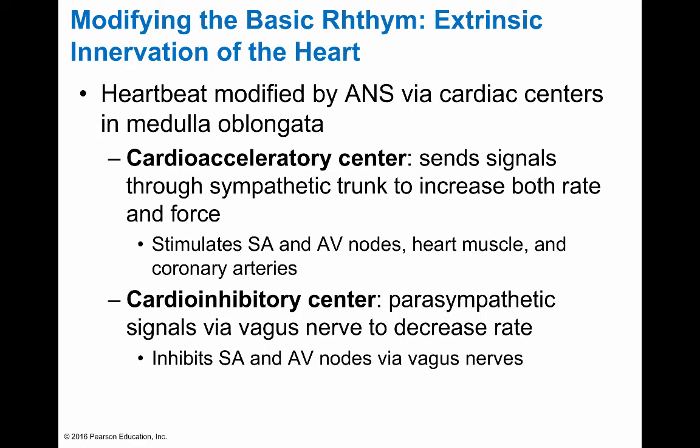There are external innervations of the heart. The heartbeat can be modified by the autonomic nervous system via cardiac centers in the medulla oblongata — these are not consciously directed. Cardiac accelerator centers send signals through the sympathetic trunk to increase heart rate, stimulating the SA node, AV node, heart muscle, and coronary arteries. There are also cardioinhibitory centers — parasympathetic signals that travel via the vagus nerve to decrease heart rate and inhibit SA and AV nodes.